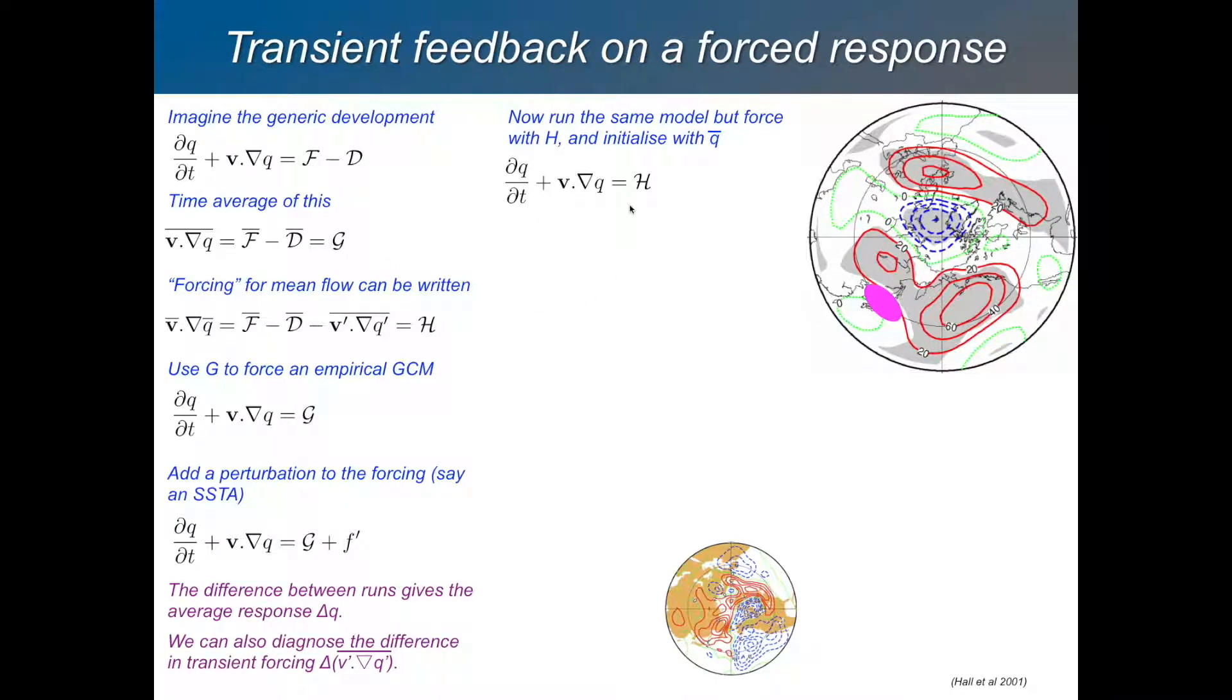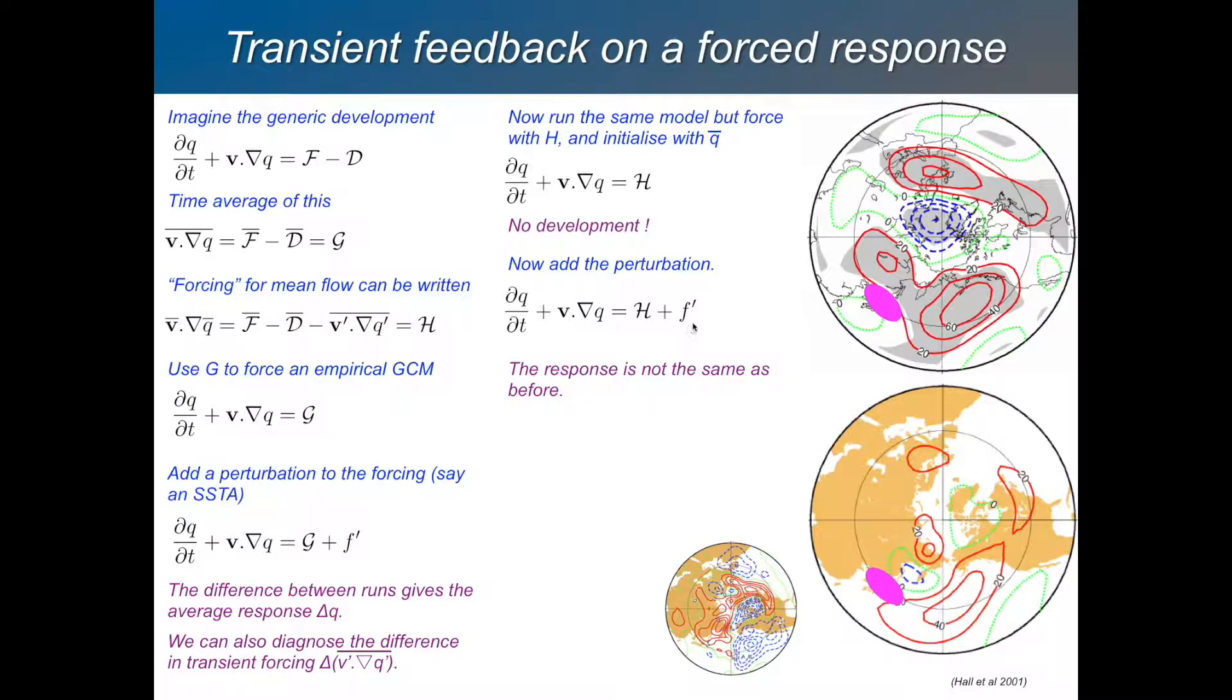H is everything. If we initialize the model with its time mean state and then force it with H, what's going to happen? Nothing at all, because H is exactly what you need to stop development. But then we can again add that forcing perturbation. Now we have a perturbation model. We have a model which the transient part is already taken into account in the forcing we apply. We can add a perturbation to the forcing. If it's small, we'll even have a linear perturbation model. What we get, we add this Pacific sea surface temperature anomaly. This is the response. It's not the same as before. This is just the linear response. This is the fully nonlinear response with modified transient eddy feedback.